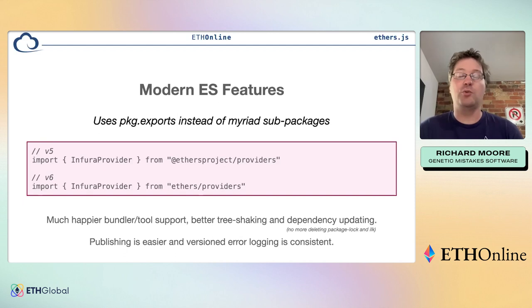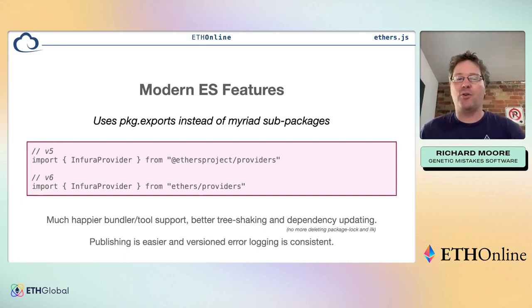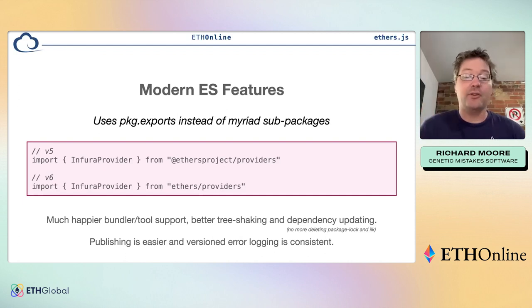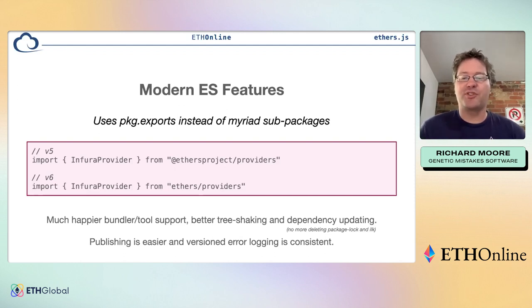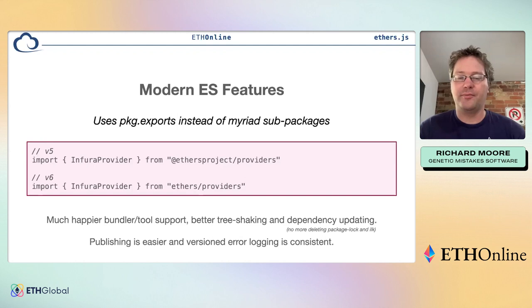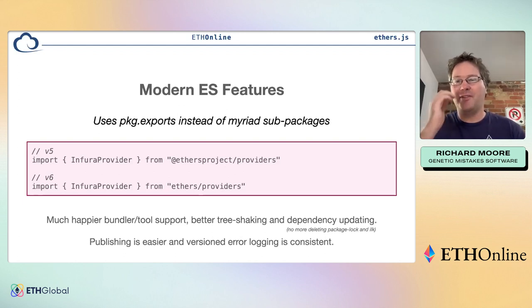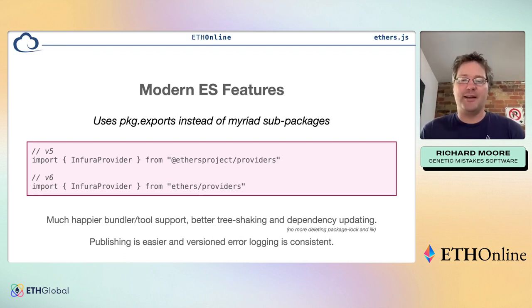The big advantage is tooling is much simpler — tools are much happier with a normal build process. The original ethers v5 had a convoluted build process to handle TypeScript composite packages plus how the bundler munges things together. You still get tree-shaking benefits because the exports steer bundlers to the right files. Publishing is also much easier maintaining one package instead of a thousand symlinks that get unsynchronized over time.